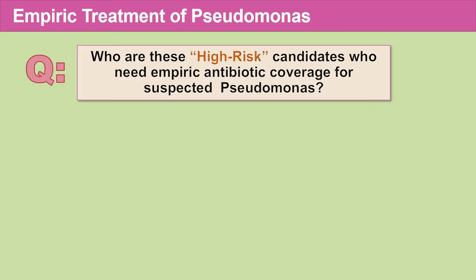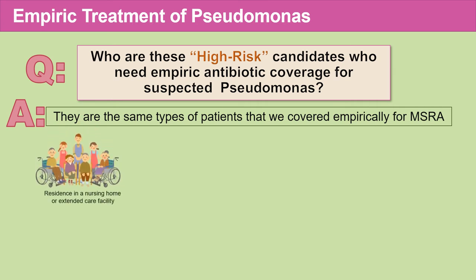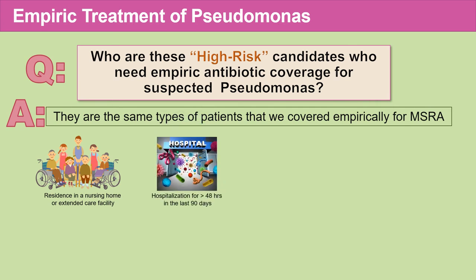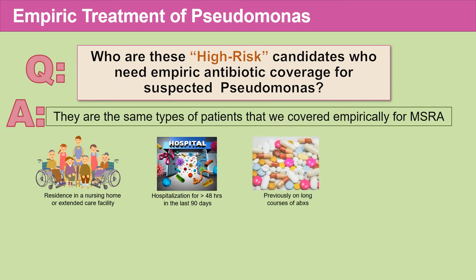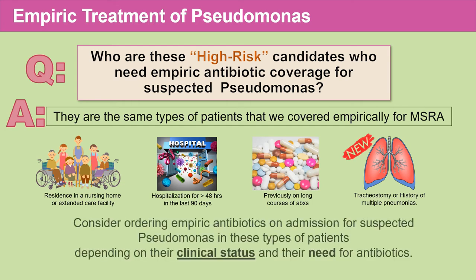High-risk candidates who need empiric pseudomonal coverage include patients from nursing homes or extended care facilities, who have been hospitalized for greater than 48 hours in the last 90 days, who have been previously on long courses of antibiotics, and for Pseudomonas specifically — patients who have tracheostomies or have a history of multiple pneumonias. For these types of high-risk patients, consider ordering antibiotics empirically for suspected Pseudomonas, depending on their clinical status and the need for antibiotics.